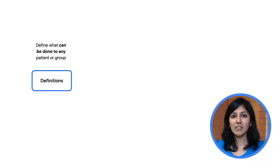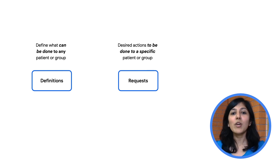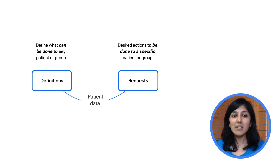The FHIR Workflow module defines three categories of resources related to workflows. The first category is resources that describe things that can be done, or definitions. Examples include Plan Definitions, Activity Definitions, Questionnaires, and Measures. Next, we have Requests, which are resources that describe things that are desired to be done for a specific patient or group. Care Plans, Communication Requests, Service Requests, Tasks, and Medication Requests are examples of requests.